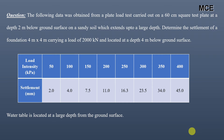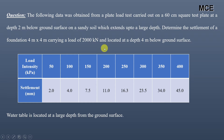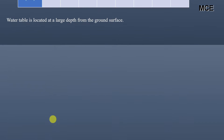The following data was obtained from a plate load test carried out on a 60 cm square test plate at a depth of 2 meters below the ground surface on a sandy soil which extends to a large depth. We have to determine the settlement of a 4m × 4m foundation carrying a load of 2,000 kN, located at a depth of 4 meters below the ground surface. The data includes load intensity values in kPa and corresponding settlement in mm. The water table is located at a large depth.